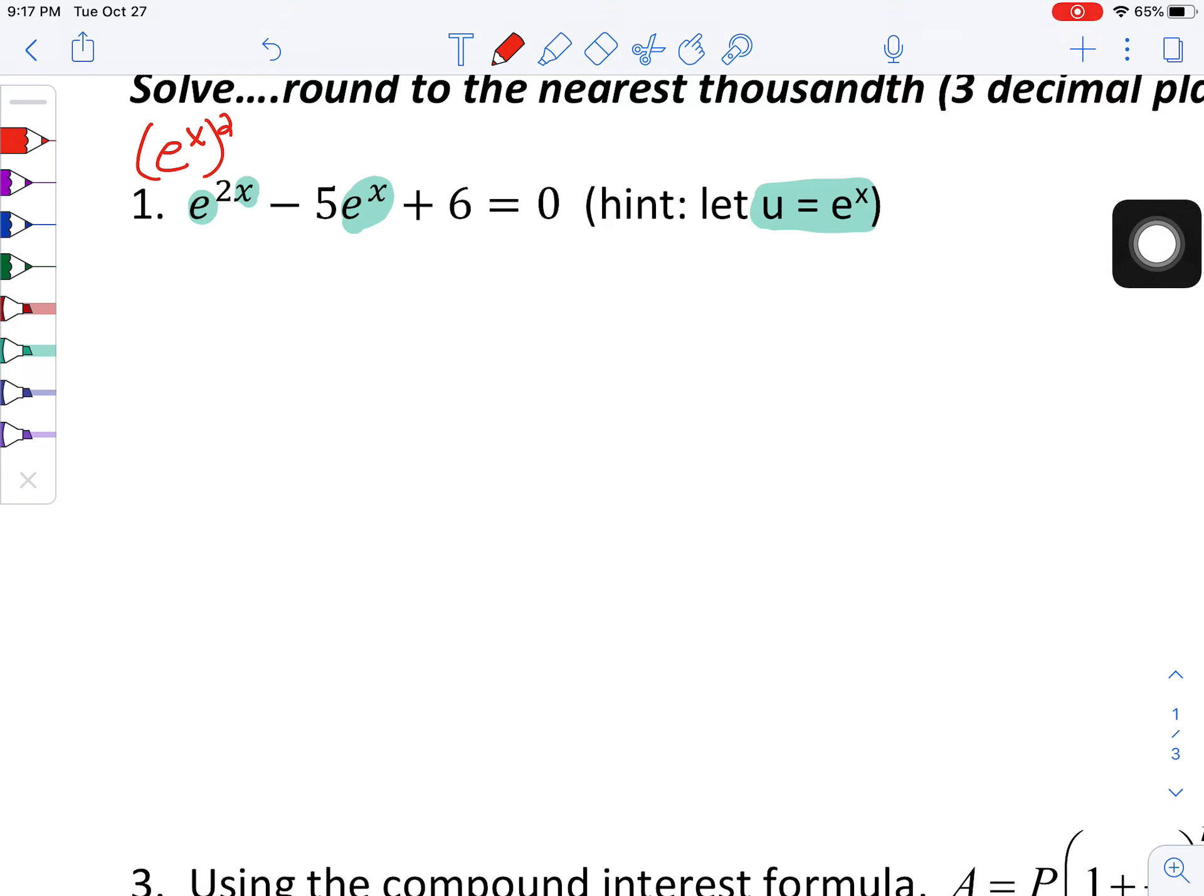So what we really have if we use u substitution is u squared minus 5u plus 6 equals 0. And I'm pretty sure we're decent at solving quadratics. So let's go ahead and solve this thing. In order to get a positive 6 and a negative 5, I need negative 3 and a negative 2. So this is going to give me u is equal to 3, u is equal to 2.